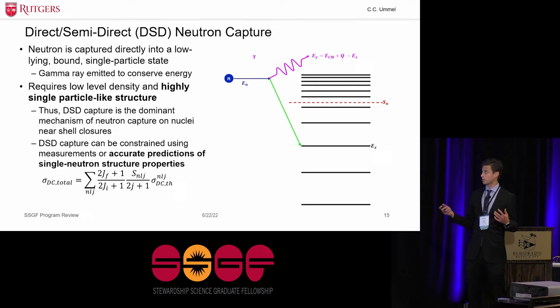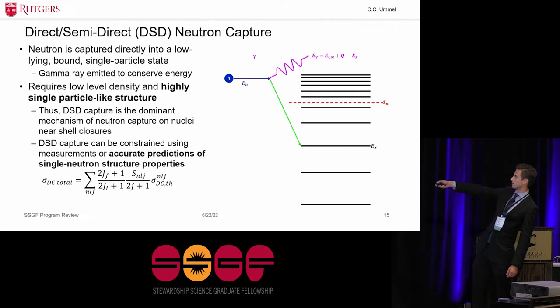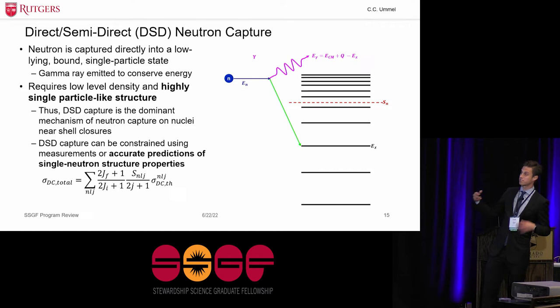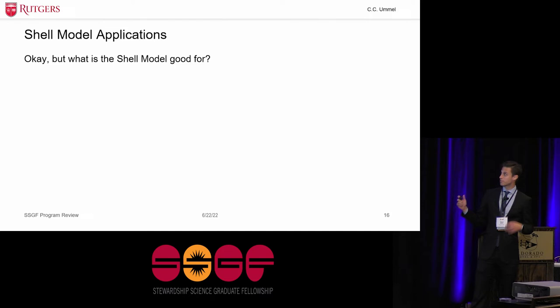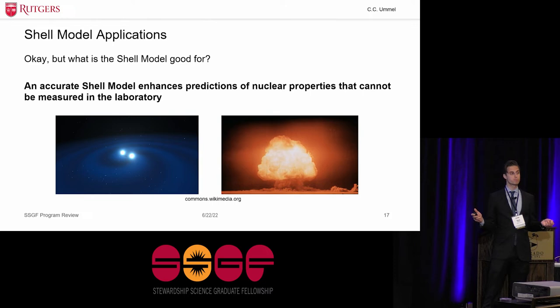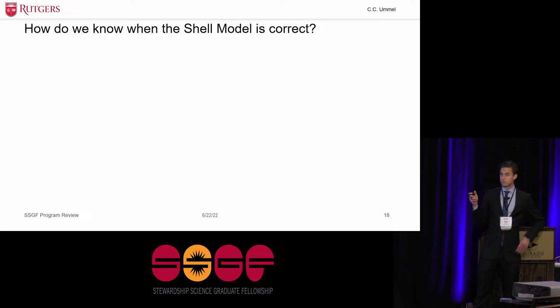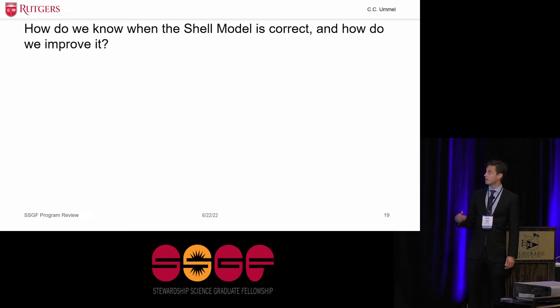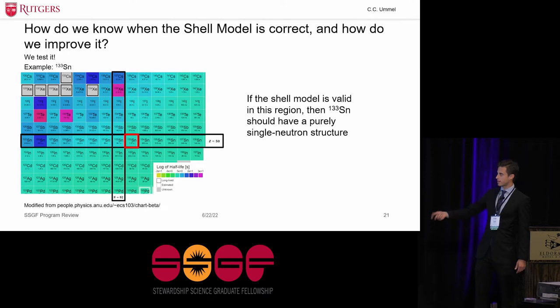So luckily, at least in some regions of the nuclear chart, not all, neutron capture occurs via a mechanism called direct-semi-direct neutron capture. Where the neutron is captured, this is a level diagram for the final resulting nucleus. And what you can see is the neutron's captured directly into a discrete single particle state. And because of that, direct-semi-direct neutron capture is believed to be the dominant mechanism of neutron capture on nuclei near shell closures. And it can thus be constrained via measurements of these single particle, actually single neutron properties of these nuclei, or in lieu of that, accurate predictions of what those single neutron structure properties might look like. And luckily, that's what the shell model tells us. So to answer the question of what the shell model is good for, an accurate shell model enhances predictions of nuclear properties that cannot be measured in the laboratory.